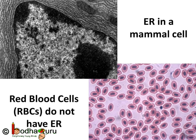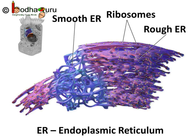The singular is cisterna. So a cisterna is a flattened membrane disc that makes up the endoplasmic reticulum. It is found in most of the eukaryotic cells, i.e. in the cells with clearly defined nuclei, but not in all eukaryotic cells. For example, our red blood cells, i.e. RBCs, do not have it.